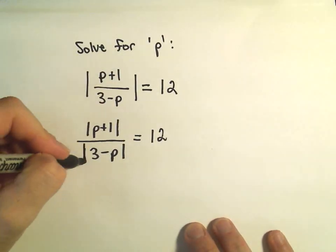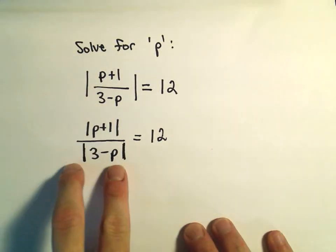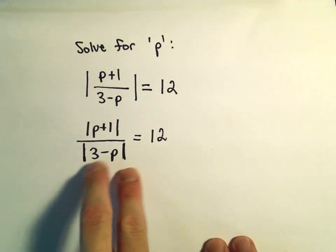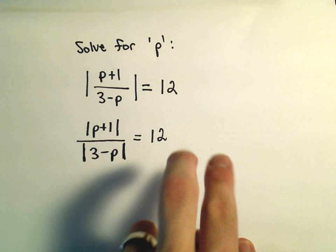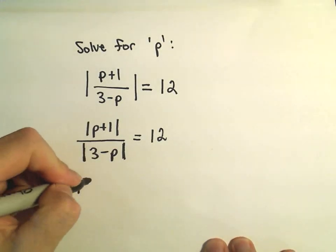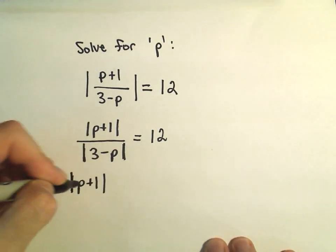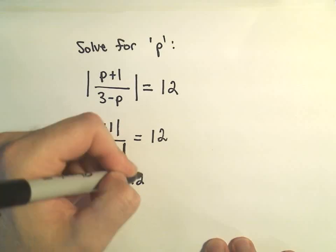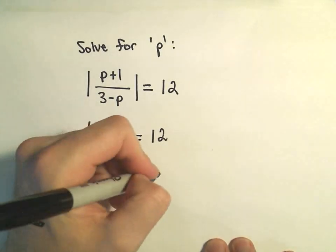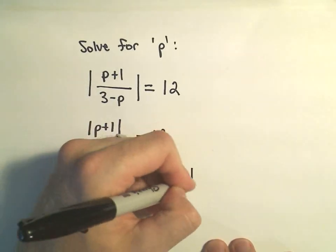Equals 12, and what I'm going to do is I'm going to multiply both sides by this quantity, the absolute value of 3 minus p. So that's just going to move over. So I've got the absolute value of p plus 1 equals 12 times the absolute value of 3 minus p.